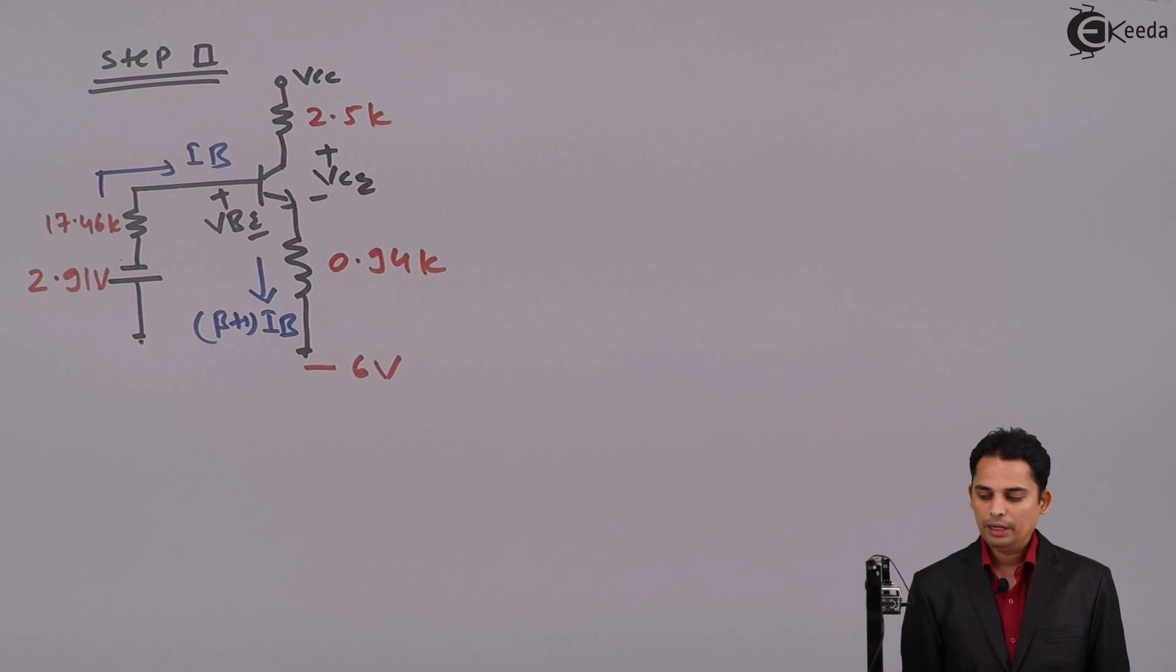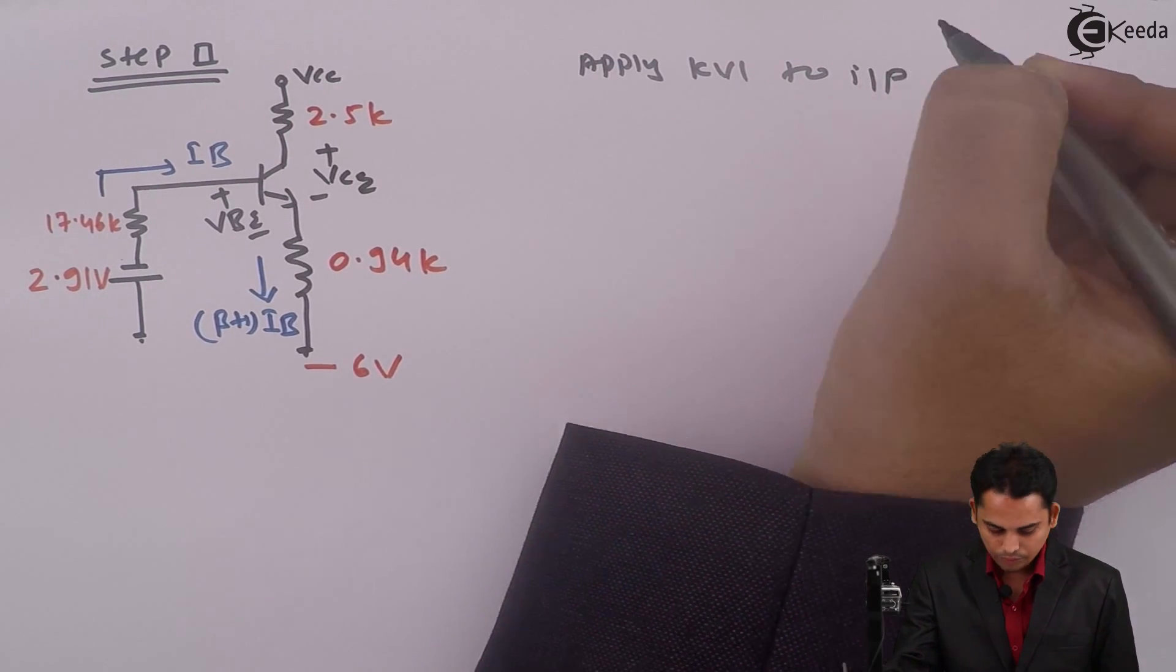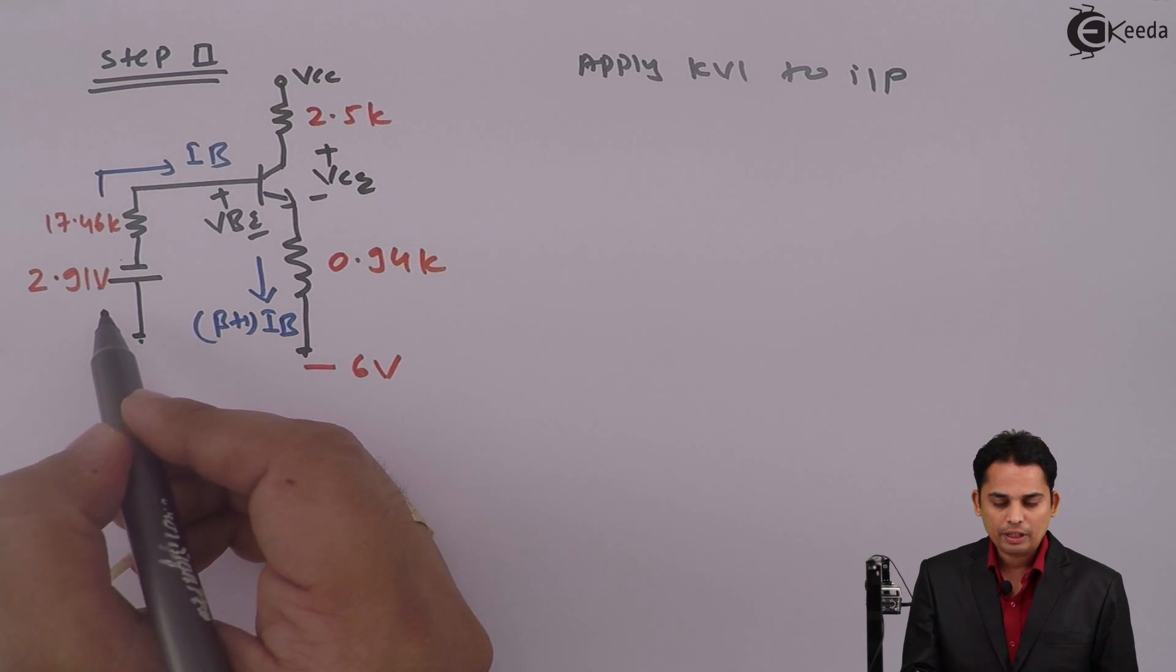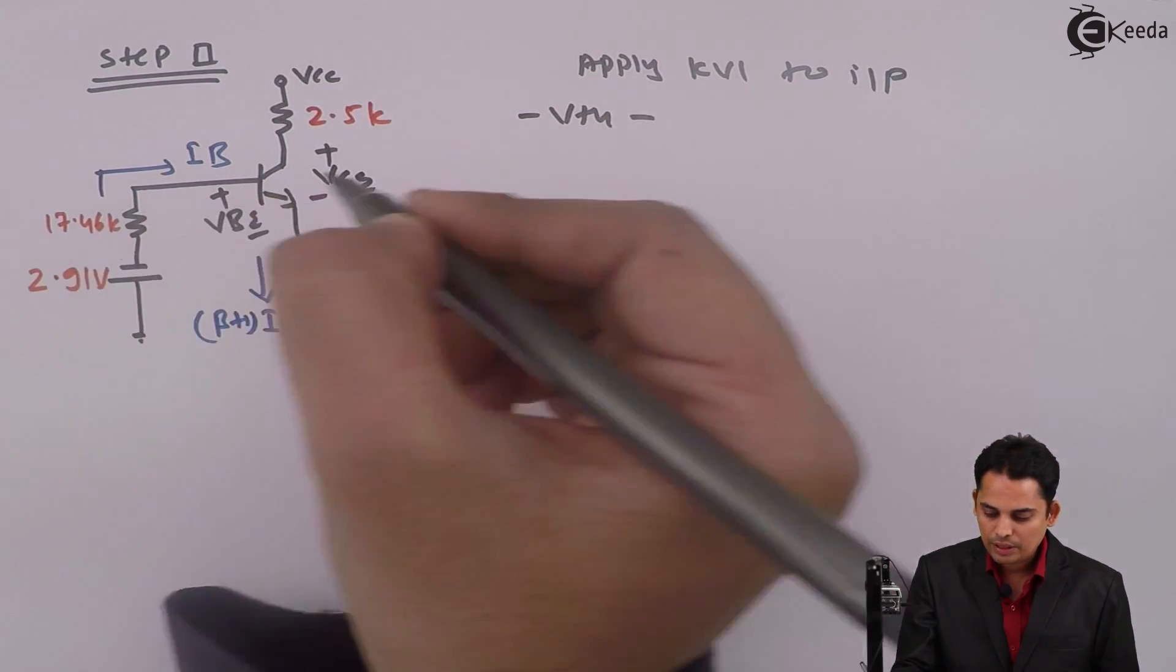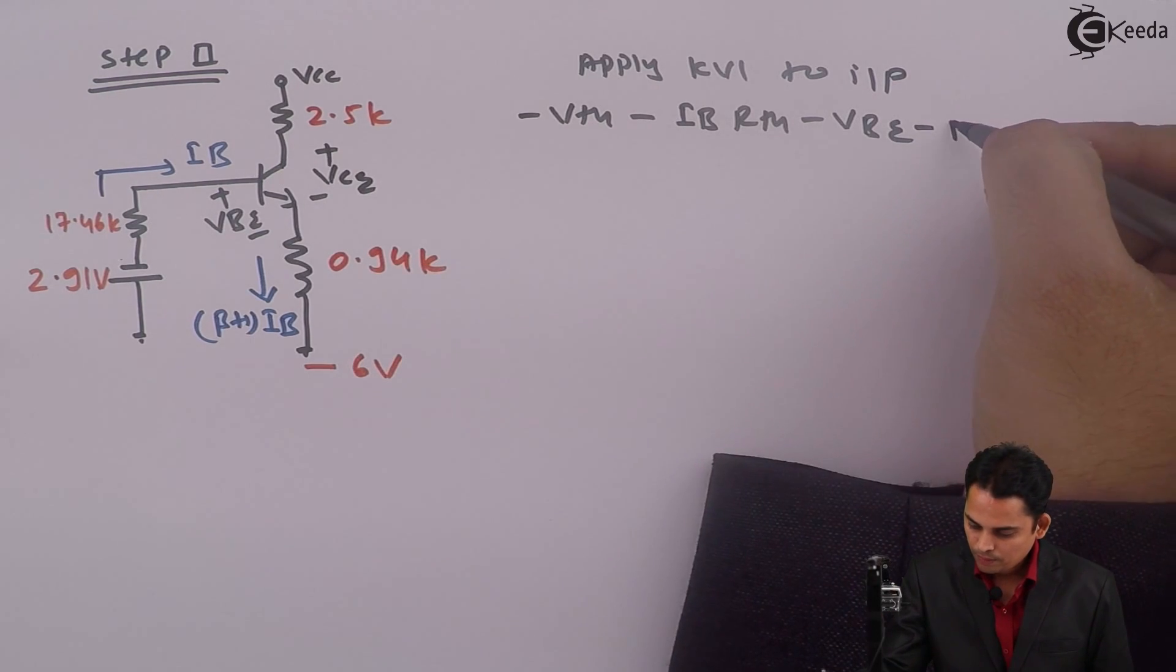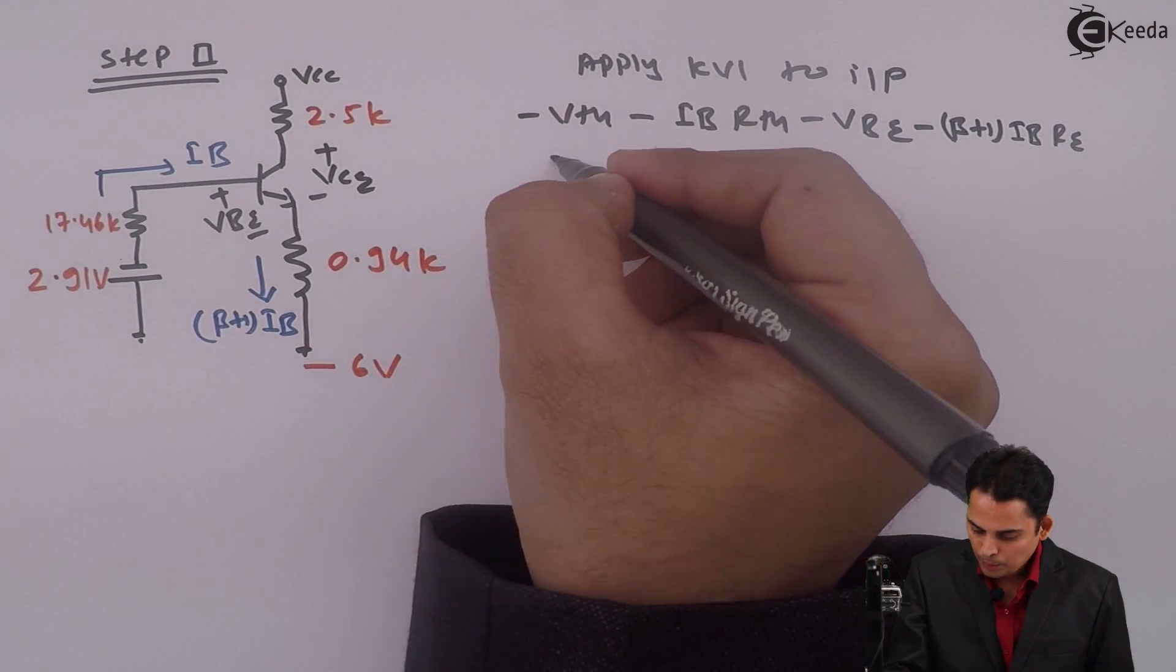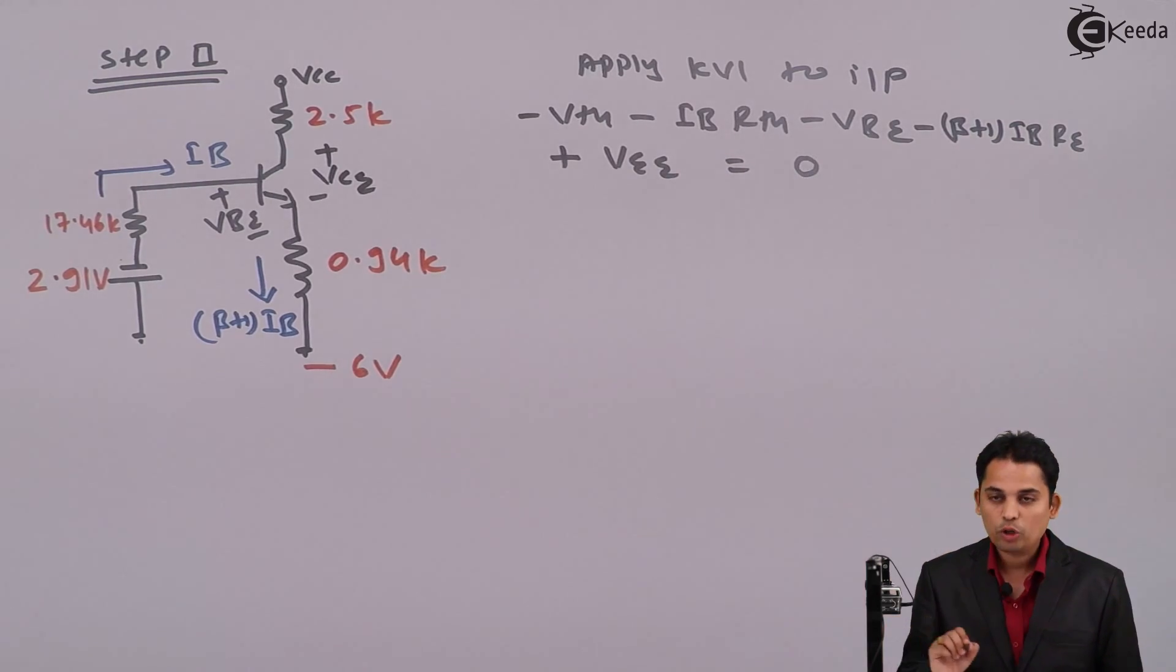Now in step 2, we will try to find out base current IB for which apply KVL to input. If we apply KVL to the input, we will get that this equation will become the current is flowing from plus to minus. So it is minus VTH minus IB into RTH minus VBE minus beta plus 1 times of IB into RE minus. Minus of minus will become plus VEE is equal to zero.